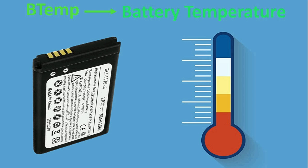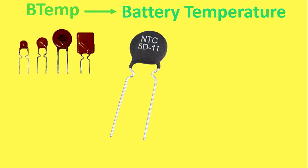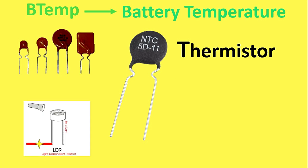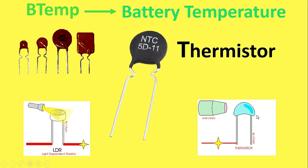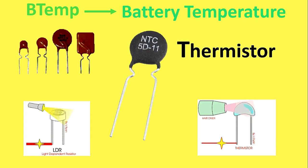Inside the battery there is a thermistor. You may have heard about LDR — when light falls on an LDR, its resistance decreases and current starts flowing. A thermistor works similarly. In the animation shown, a thermistor is being heated by a hair dryer. When heated, the power supply starts flowing; when not heated, it stops. When temperature rises, the internal resistance of the thermistor decreases, allowing a signal to flow.